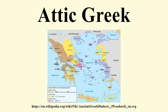Athens and its dialect remained relatively obscure until constitutional changes led to democracy in 594 BC, the beginning of the classical period and of Athenian influence. The first extensive works of literature in Attica are the plays of the dramatists Aeschylus, Sophocles, Euripides, and Aristophanes in the 5th century BC.